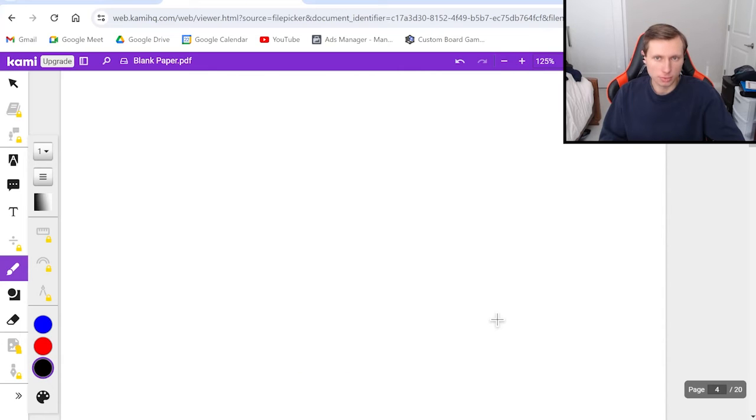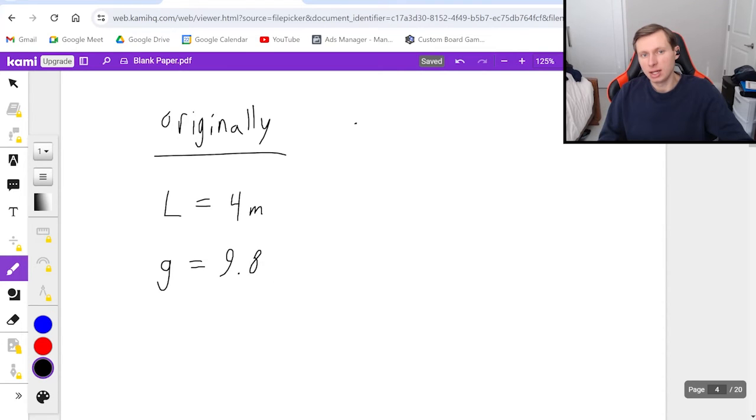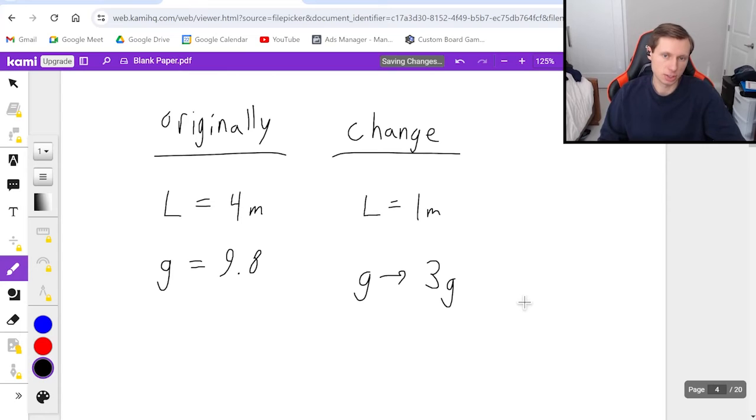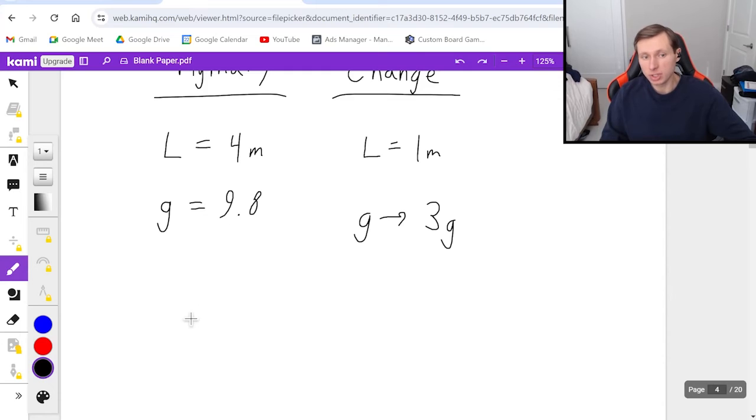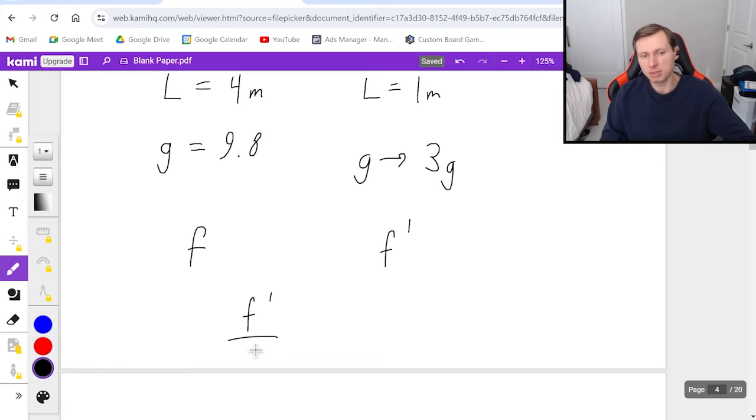And so now I've got one more for you. This time, I'm going to make it slightly different. So originally, this pendulum is going to have a length of four meters, and the acceleration of gravity is still 9.8. And now we're going to change these values. We're going to now use a string that's one-fourth as long as before, one meter. And we're going to move to a planet that has three times the acceleration of gravity. So three times 9.8. And my question for you is, if the original frequency, we call f, and the new frequency we call f prime, I want you to find for me f prime divided by f.